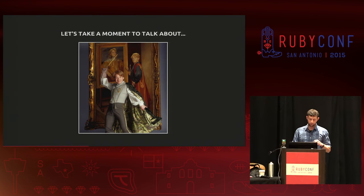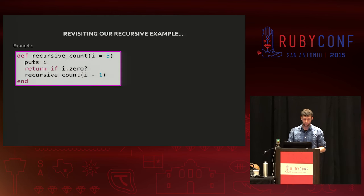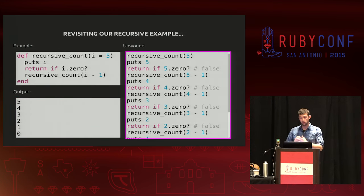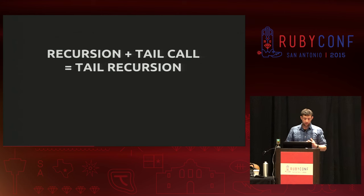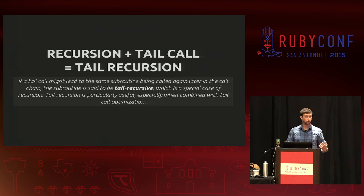Let's pause and reflect on recursion. If we look at that recursive_count again, the output is 5 down to zero. Unwinding the stack: recursive_count gets called, puts 5, checks if that's zero, then calls itself again with 4, continuing all the way down until the base case hits zero and you exit. When you have recursion plus a tail call like this, you end up with what is called tail recursion — a special kind particularly useful when combined with tail call optimization.